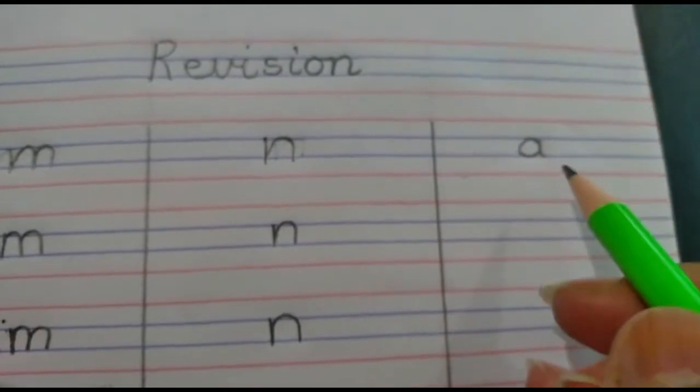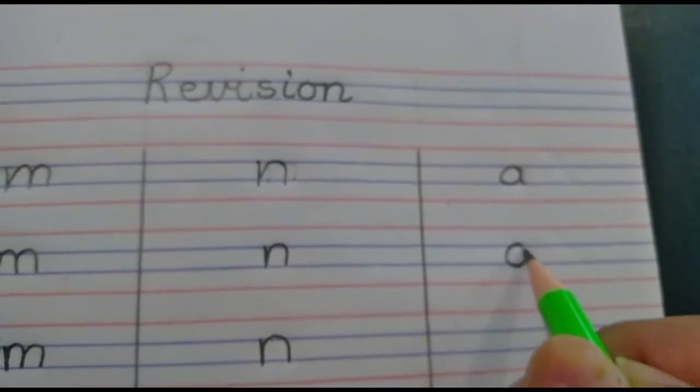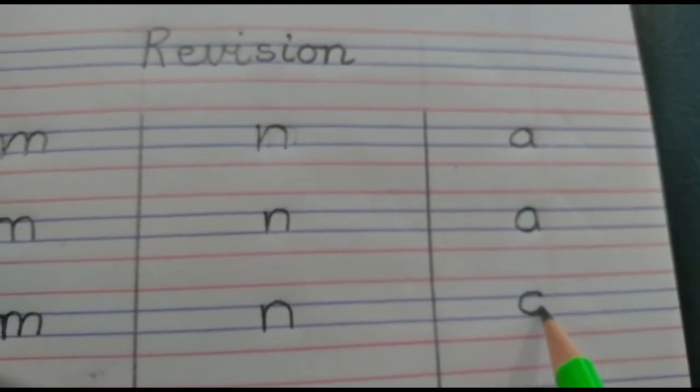After we write N, we are going to write letter A. Okay, so we start from the blue line, we go around, go up, come down, A. A says A. So come on, we start from the blue line, we go around, we go up, and we come down, A.